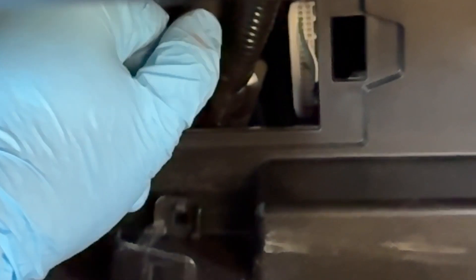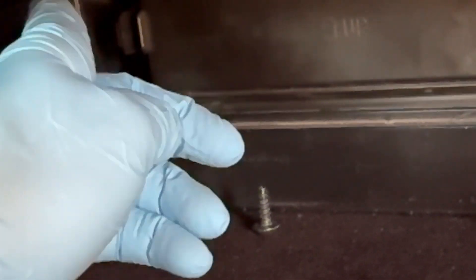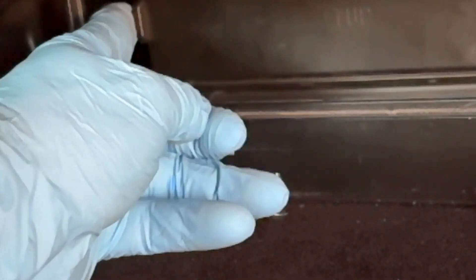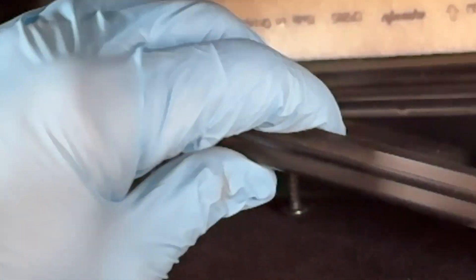It has a secondary panel with a clip on the left and the right. Once you've unclipped both of those, that panel will come off and show you where the cabin filter is.